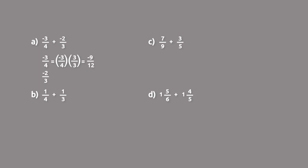With negative 2 thirds, we multiply both the numerator and denominator by 4, because 3 times 4 equals 12. So negative 2 thirds times 4 over 4 equals negative 8 twelfths. We have to be careful with negative numbers — the greater the absolute value, the less it actually is. Since negative 9 twelfths is less than negative 8 twelfths, negative 3 fourths is less than negative 2 thirds.